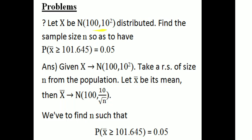Let X be a normal distribution with mean 100 and variance 10 squared. Find the sample size n so as to have probability of x̄ greater than or equal to 1.1645 equal to 0.05.